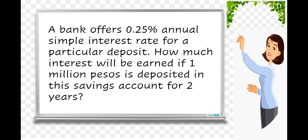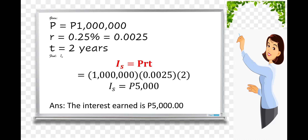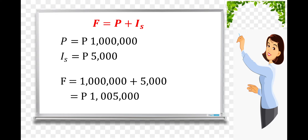Next: a bank offers 0.25% annual simple interest rate for a particular deposit. How much interest will be earned if 1 million pesos is deposited in this savings account for two years? Given: principal is 1 million pesos, rate is 0.25% or 0.0025 in decimal, and T is two years. I sub S is equal to PRT, wherein 1,000,000 times 0.0025 times 2 equals 5,000 pesos. Therefore, the interest earned on 1 million after two years is 5,000 pesos.